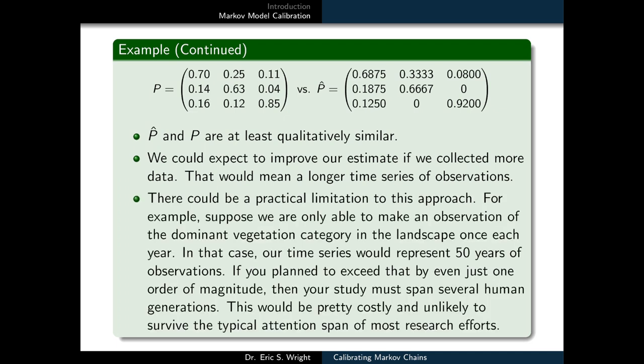However, there could be a real practical limitation to this approach. For example, suppose we are only able to make an observation of the dominant vegetation category in the landscape once each year. In that case, our time series that we already have would represent 50 years of observations.